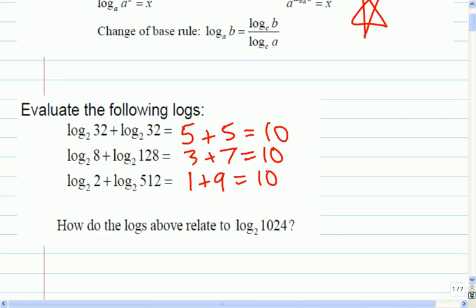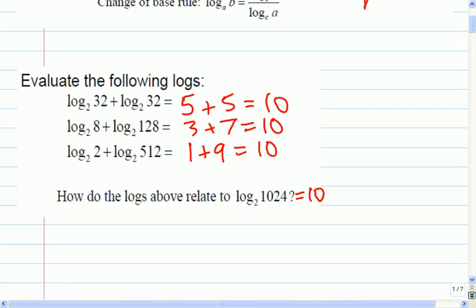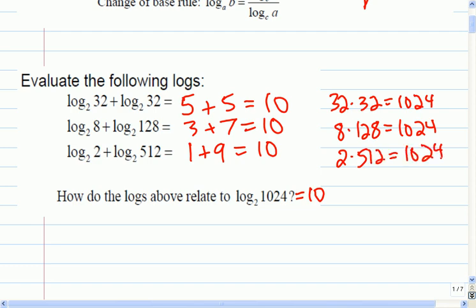Okay, so how do they relate to the log of 1,024? It's ten. Well, yeah, that one's also equals to ten. But can anybody figure out how you get from, say, log 32 plus log 32 to log 1,024? Wow, you guys are quick. You had your coffee this morning, huh? So 32 times 32 is equal to 1,024. 8 times 128 is also equal to 1,024. And 2 times 512 is 1,024. So that's how they're related to the log base 2 of 1,024.